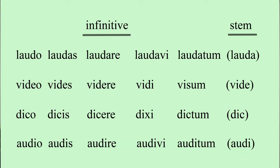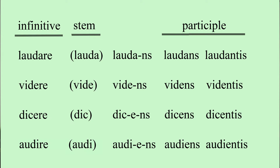You may recall that we looked at four conjugations. The first one was laudo, laudas, laudare, laudavi, laudatum — and the stem is 'lauda'. The second was video, vides, videre, vidi, visum — and the stem is 'vide'. The third was dico, dicis, dicere, dixi, dictum — and the stem was 'dik'. If we take the first one, laudare, with the stem lauda, we can add the letters 'ns' and we have laudans.